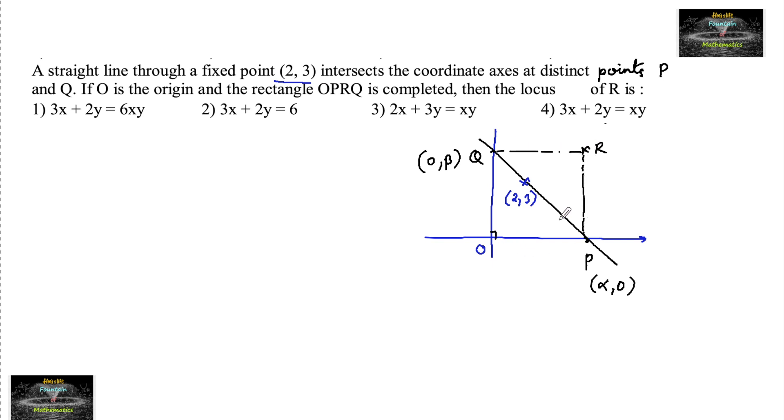Since it is a rectangle, PR is perpendicular to the X-axis and QR is perpendicular to the Y-axis. And hence we can consider R point is (α,β).